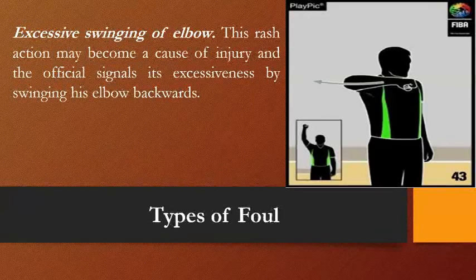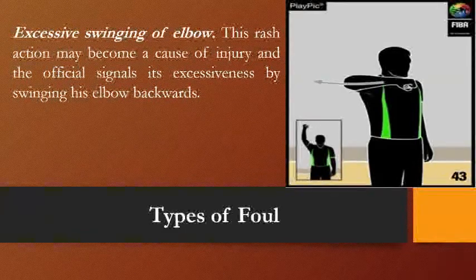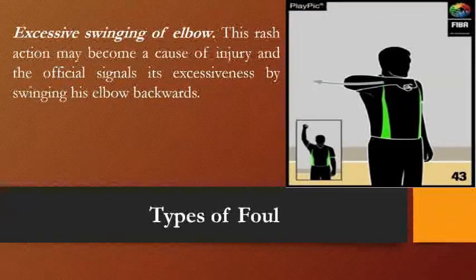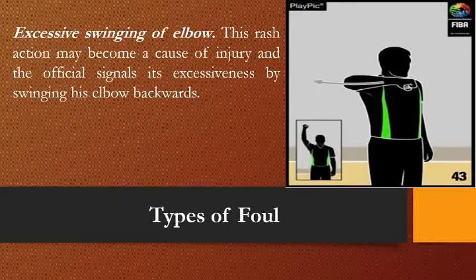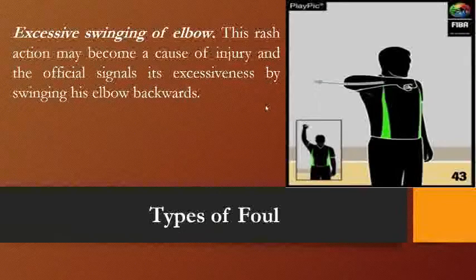Excessive swinging of the elbow: this rush action may cause injury. The official signals this by swinging the elbow backwards. Sometimes after a foul or violation there is a second motion by the player swinging their elbow, and this can be called not only as a personal foul but also as a technical foul, unsportsmanlike foul, or disqualifying foul, because swinging the elbow may cause injury to another player.